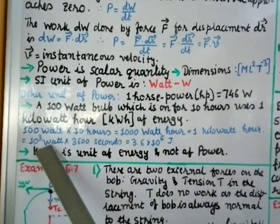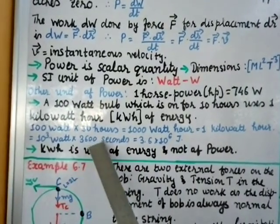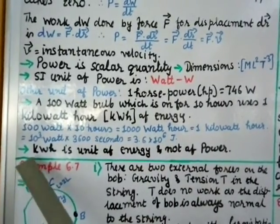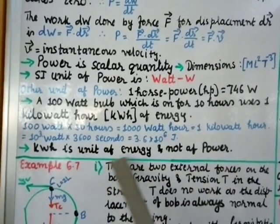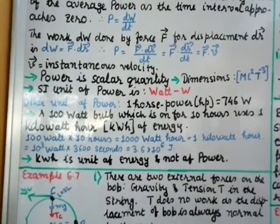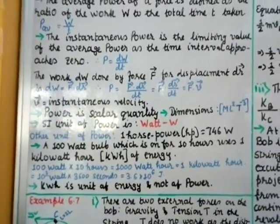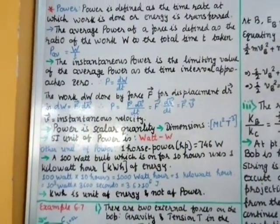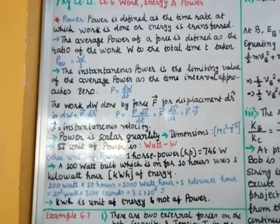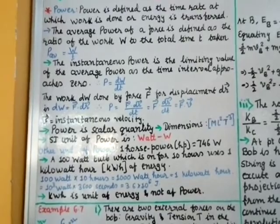One kilowatt-hour equals 10³ watts into 3600 seconds, which gives 3.6 × 10⁶ joules. So kilowatt-hour is a unit of energy, not power. We have studied the definition of power: simple definition, average power, instantaneous power, the formula P = F·v, units, and dimensions.